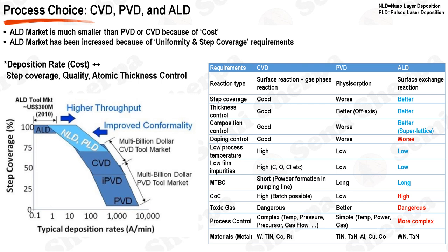The defining characteristic of ALD is its surface exchange reaction, which offers unparalleled step coverage and thickness control. This is especially advantageous in the creation of superlattice structures and for applications that require low process temperatures. Additionally, ALD is known for its long mean time between cleaning, MTBC, largely attributed to the absence of powder formation in the pumping line, a common issue in CVD processes. This feature translates to less maintenance downtime and increased operational efficiency.